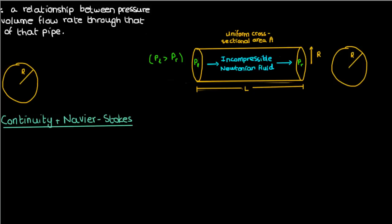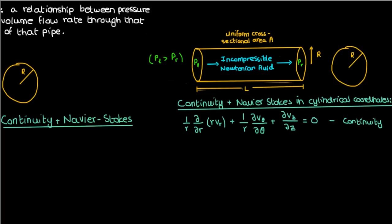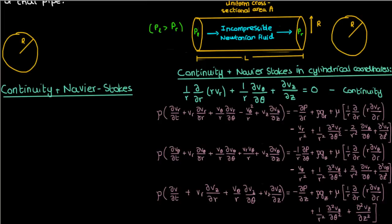Now since the geometry of the pipe is cylindrical, it would be easiest to use cylindrical coordinates when writing down our equations. If we do that, here's what our four equations - one for continuity and three for the Navier-Stokes in each of the three dimensions - will look like. Again, these equations only apply to an incompressible Newtonian fluid, which is what we've assumed here.